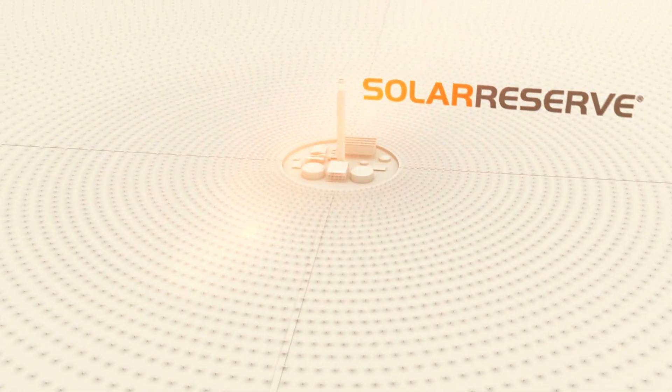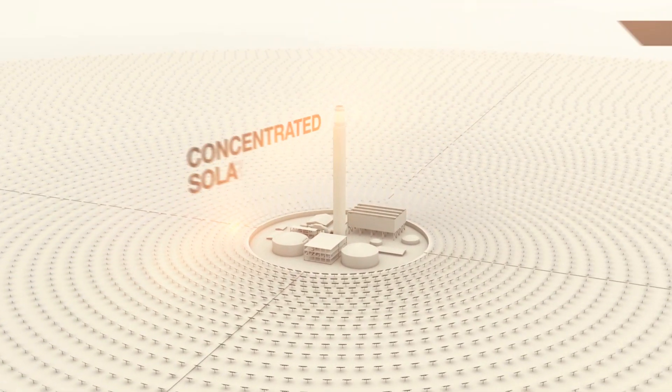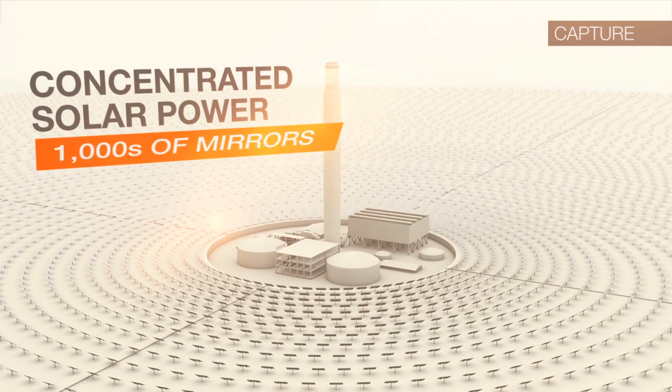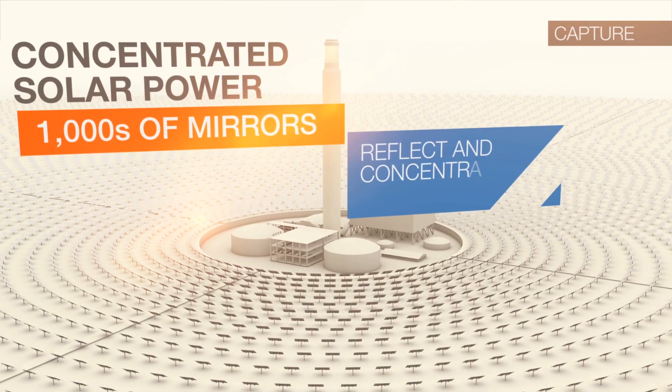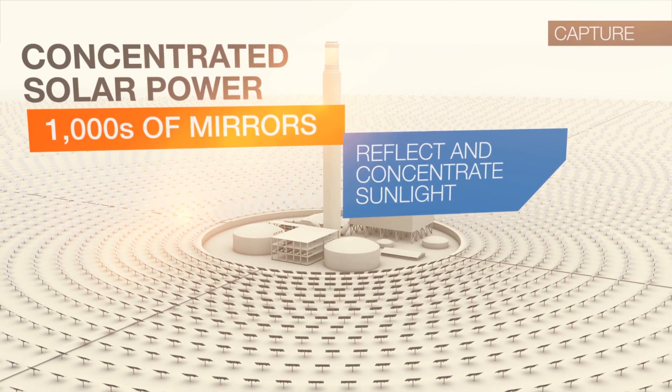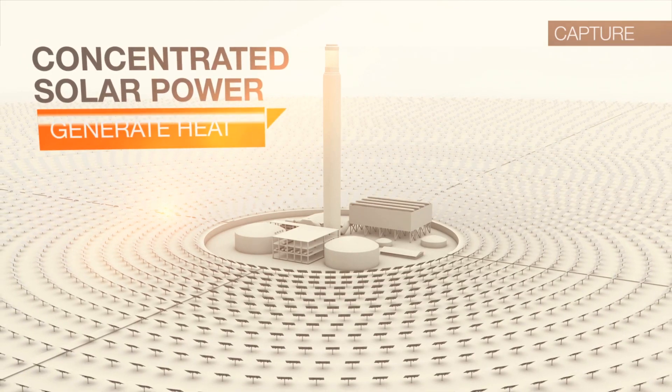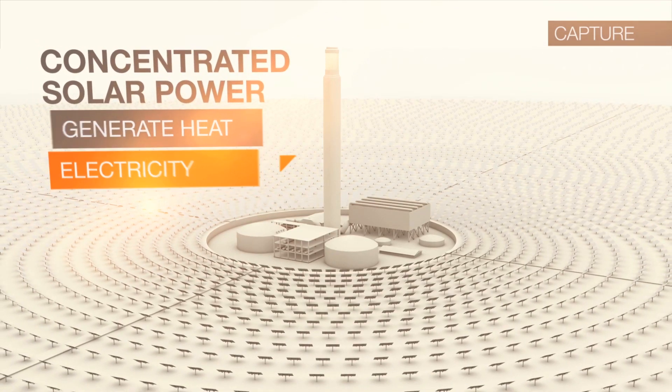Solar Reserve's technology, typically referred to as concentrated solar power, uses thousands of mirrors to reflect and concentrate sunlight onto a central point to generate heat, which in turn is used to generate electricity.